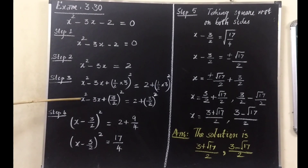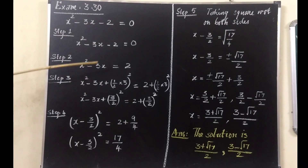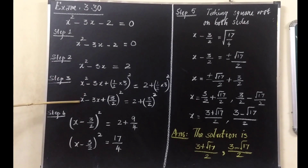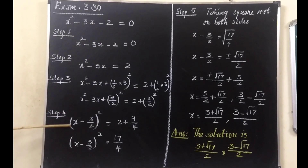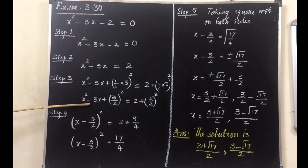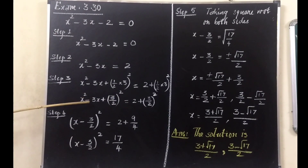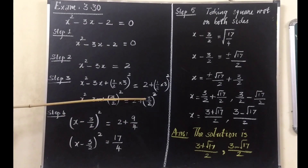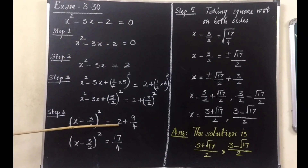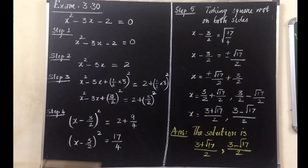So: x squared minus 3x plus (3/2) squared on the left hand side, and 2 plus (3/2) squared on the right hand side. Step 4: change the left hand side as an identity. This is of the form a squared minus 2ab plus b squared, where a is x and b is 3/2. Since it is a minus term, this should be written as (x minus 3/2) whole squared. Then simplify the right side: 2 plus 9/4 — taking common denominator 4: 8 plus 9 is 17, so 17 by 4.